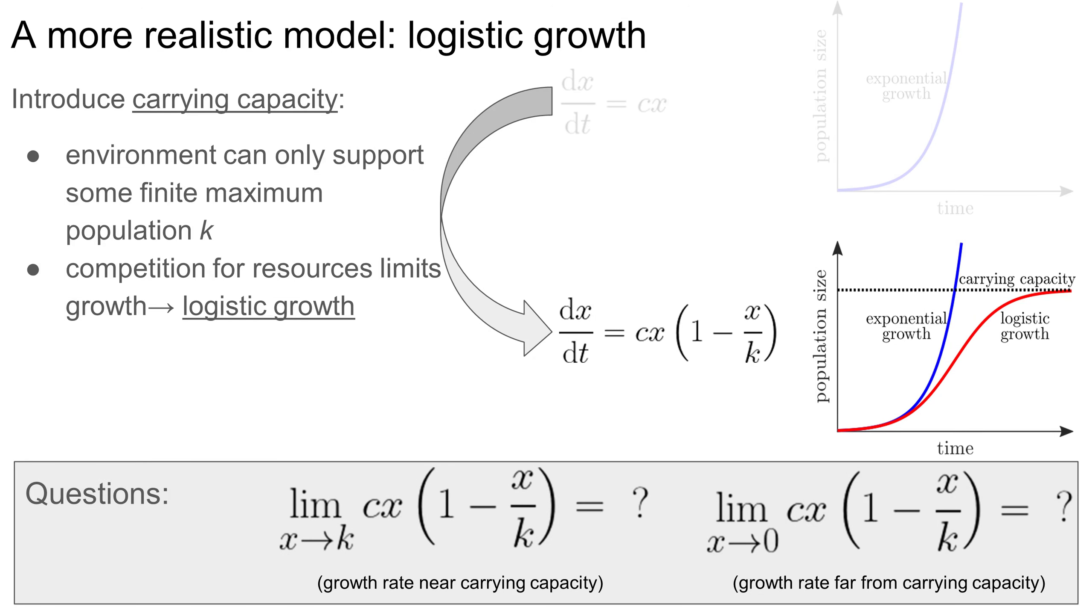Even with this simple simulation, though, we can ask a couple of questions about the mathematical model. First, what is the limit of the growth rate as the population approaches the carrying capacity? Well, it's going to be zero, because as x approaches K, the term inside the parentheses approaches zero. In other words, the population curve flattens out as the population approaches the carrying capacity, and it does this asymptotically.